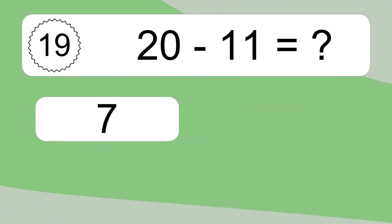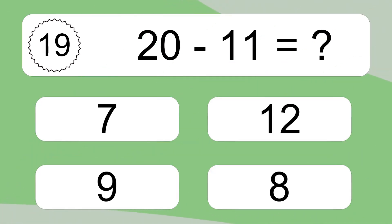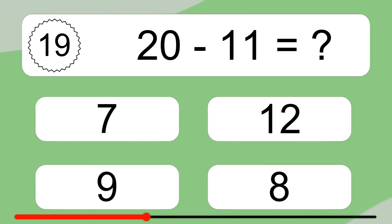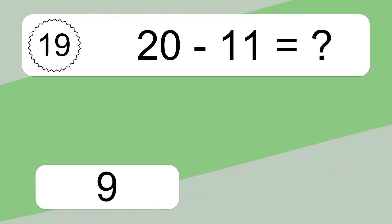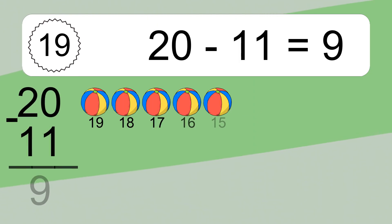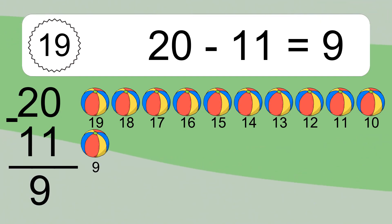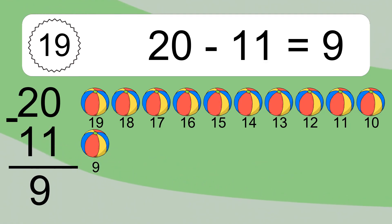20 minus 11 equals what? 20 minus 11 equals 9. Let's count it: 19, 18, 17, 16, 15, 14, 13, 12, 11, 10, 9.